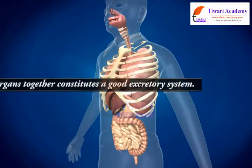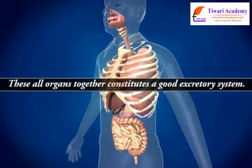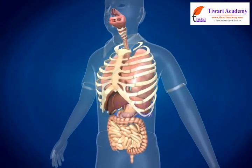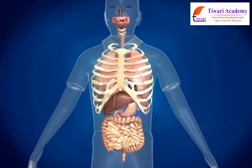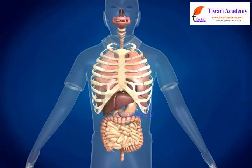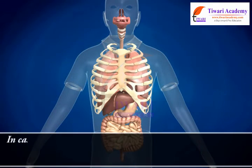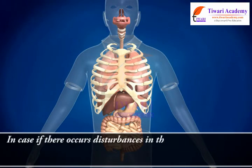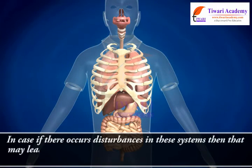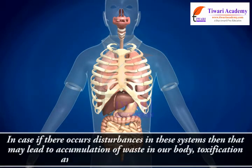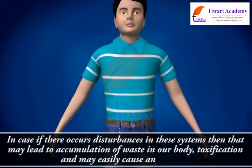Students, all these organs together constitute a good excretory system. It is very important that all these organs and systems work normally to excrete metabolic wastes from the body. If disturbances occur in these systems, it may lead to accumulation of waste, toxification, and disease.